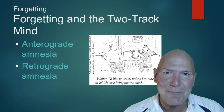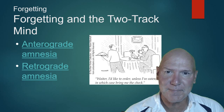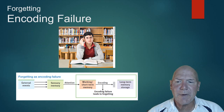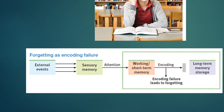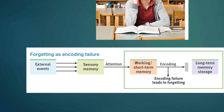One reason we forget is encoding failure. External events go into your sensory memory, and everything we don't pay attention to is gone — you won't remember it because you haven't stored it. Encoding happens between sensory memory and working memory. If we don't encode it into working memory, it's gone.